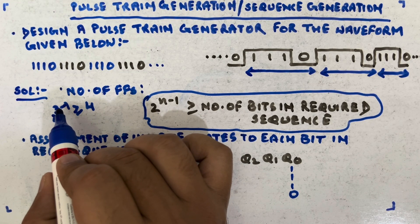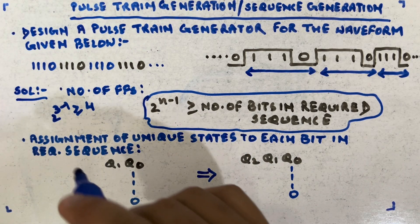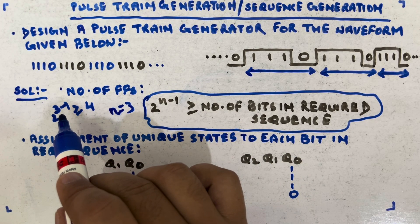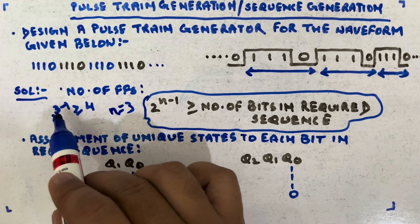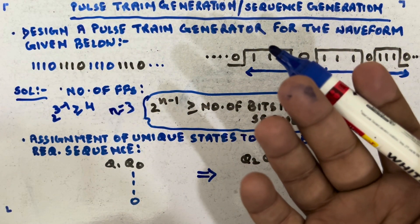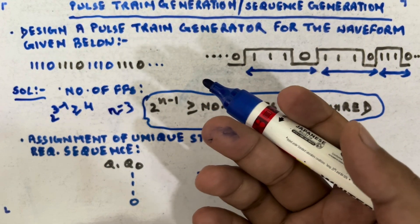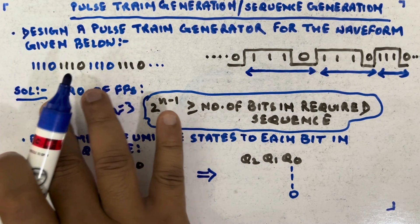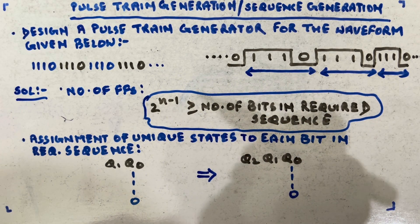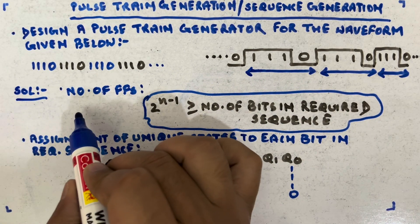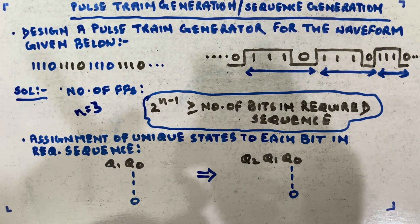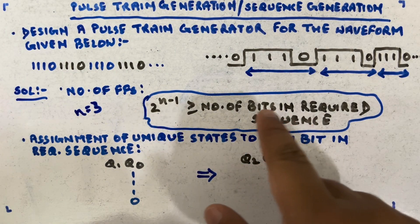Let's try n=3: 2^(3−1) = 2^2 = 4, and 4 is equal to 4, so this is valid. We could use n=4 where 2^3=8 ≥ 4, but we don't want extra complexity and cost. So we go for the minimum value of n that satisfies the expression. n=3, meaning 3 flip-flops are required to generate this sequence.